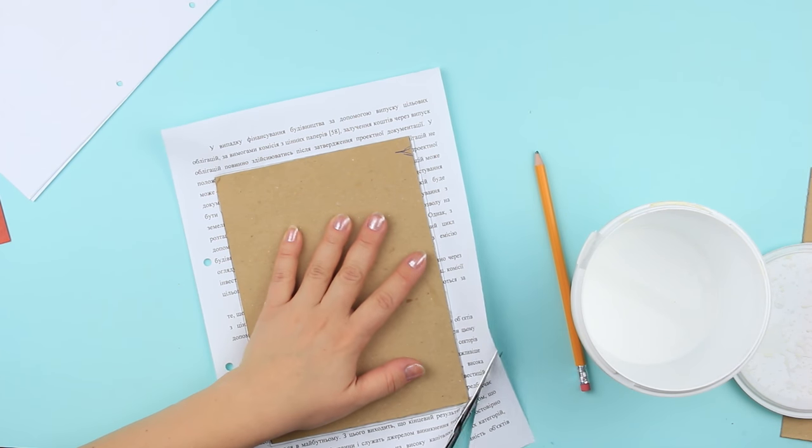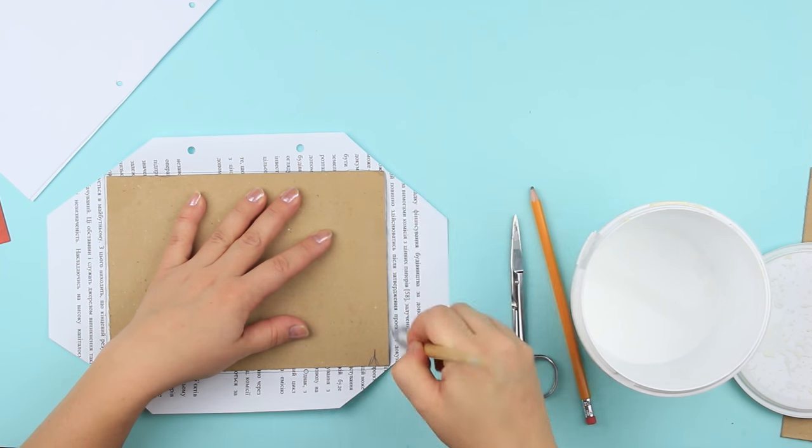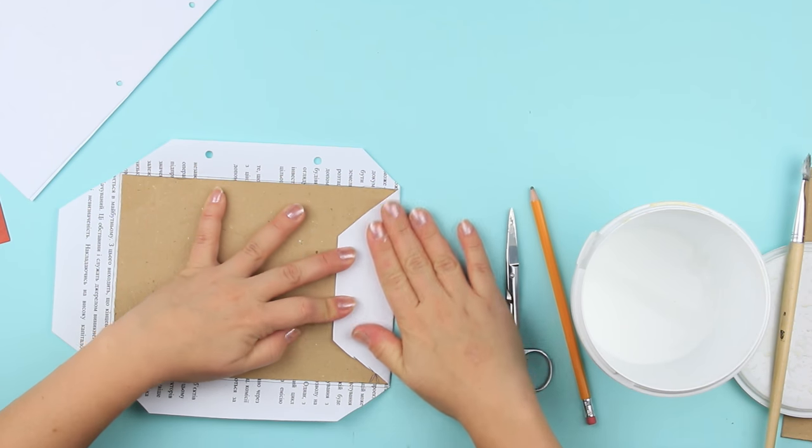Cut off the corners. Add glue to the paper. Fold and press down.